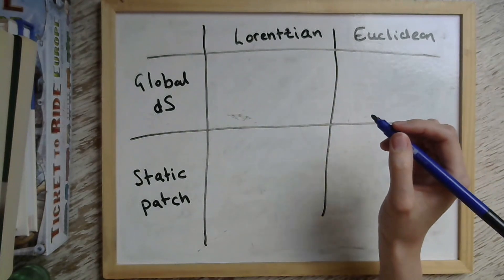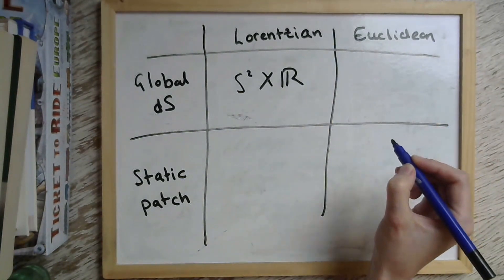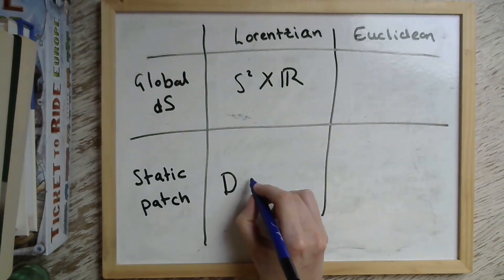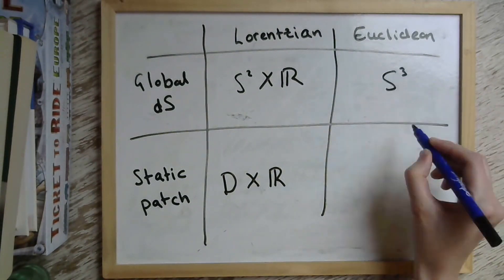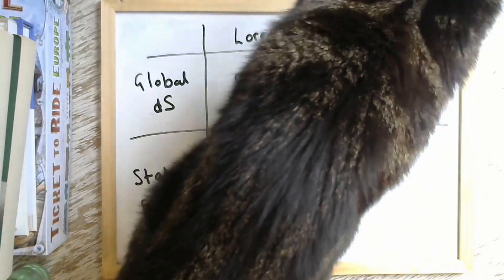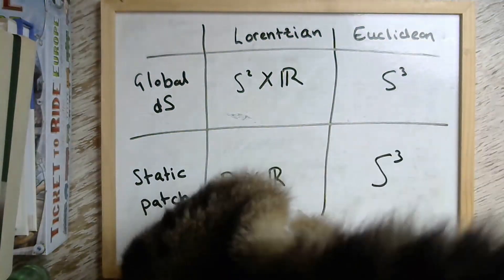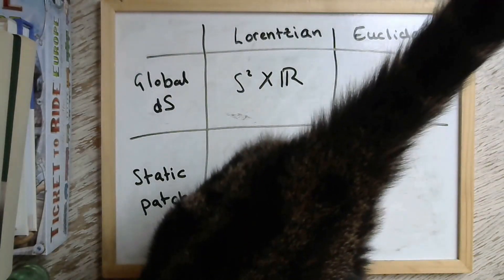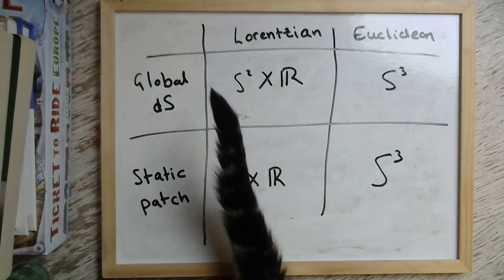So to summarize, from a Lorentzian perspective, global de Sitter can be described as a two sphere times the real line and its static patch can be described as a disk times the real line. But from a Euclidean perspective, both of these objects are described as a three sphere. So the idea is that we want to put some theory on the disk times the real line and the same theory on the three sphere to see if we can find some relationship between the Euclidean physics and the Lorentzian physics of the static patch in de Sitter.